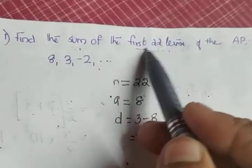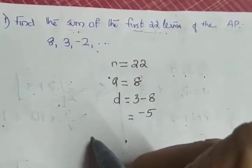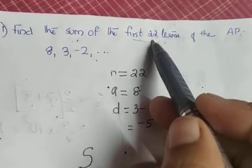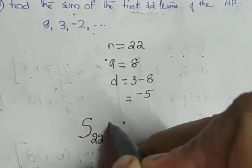What is the question? Sum of first 22 terms. Sum we will represent by S. First 22 terms means it is S₂₂. What is the formula?